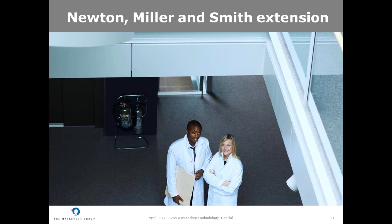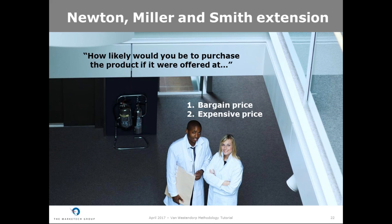The classic Van Westendorp analysis does not inform willingness to purchase, meaning the demand. This is a downside of the classic model because while it is important to know the acceptable price range for a product, it is equally important to know the proportion of customers that will actually purchase the product. Getting insight on demand is possible by extending the set of Van Westendorp questions with the Newton, Miller & Smith extension proposed in 1993. To do so, we include two questions on purchase likelihood. First: how likely would you be to purchase the product if it were offered at your bargain price? And second: how likely would you be to purchase the product if it were offered at your expensive price?